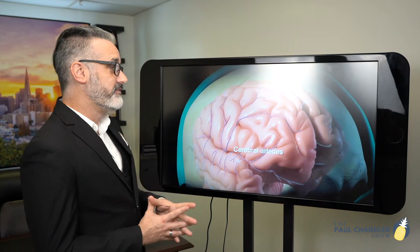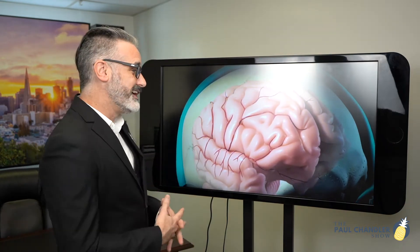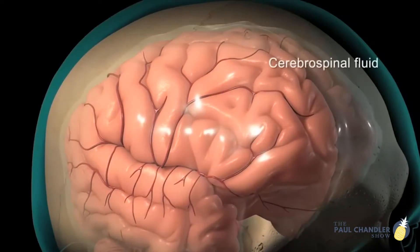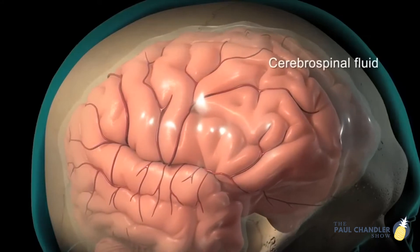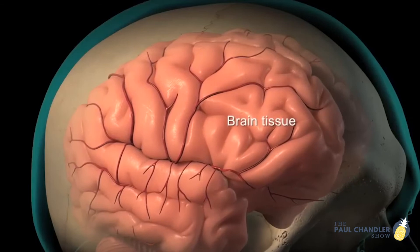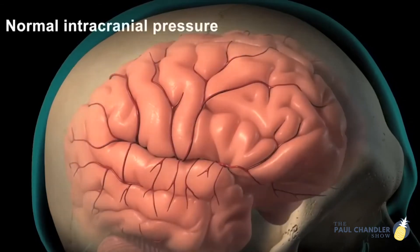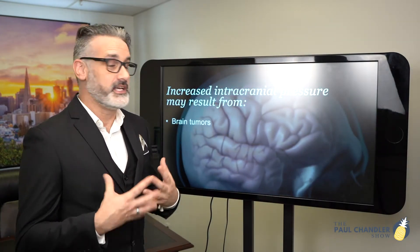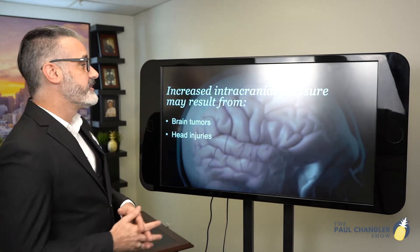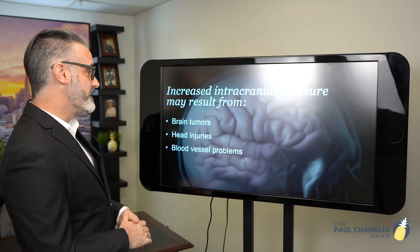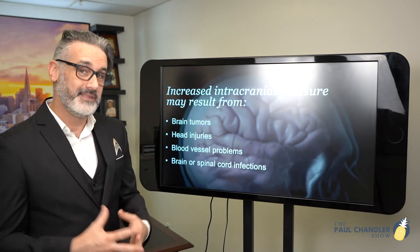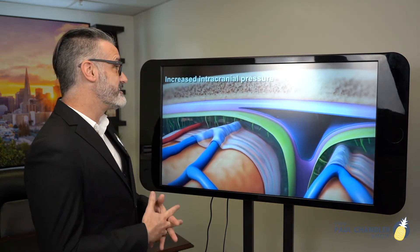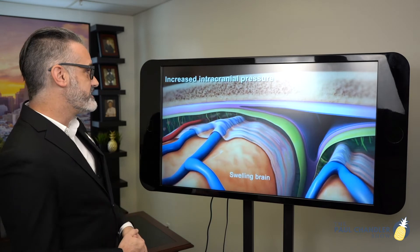We also have several cerebral arteries that go through the brain, supplying blood to keep it functioning. The brain has four different lobes, and outside those lobes is the cerebrospinal fluid, which helps connect and keep the brain tissue together and maintains normal intracranial pressure. However, there are several reasons why we may have increased pressure — including brain tumors, head injuries, blood vessel problems, and brain or spinal cord infections. When that occurs, sometimes we need to go into the brain, because all of this increases cranial pressure.